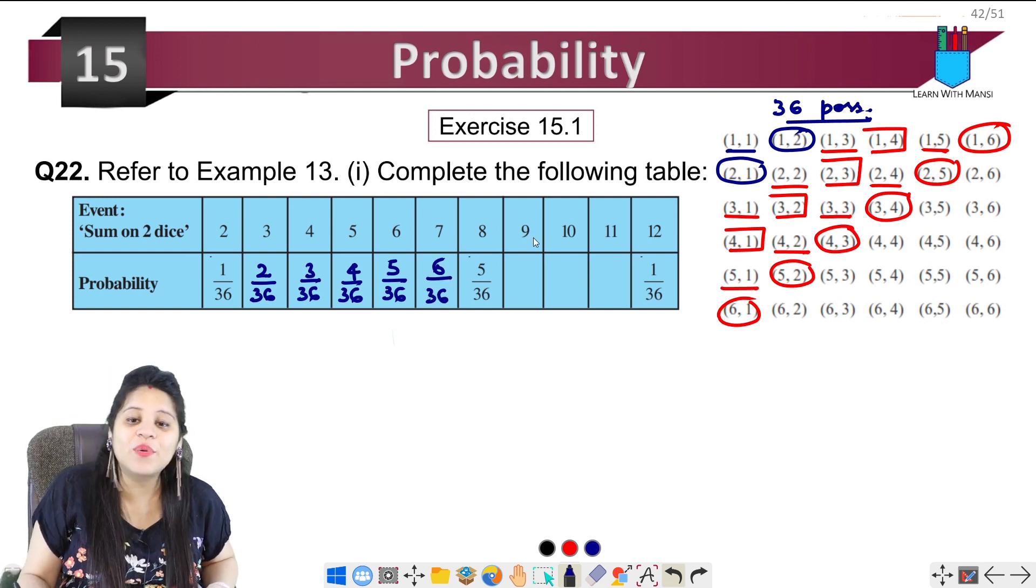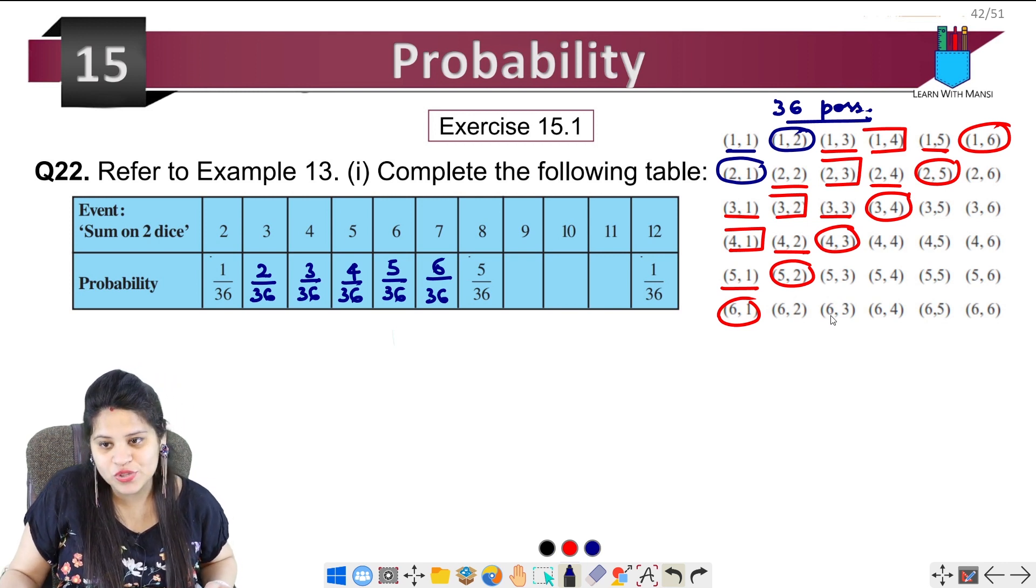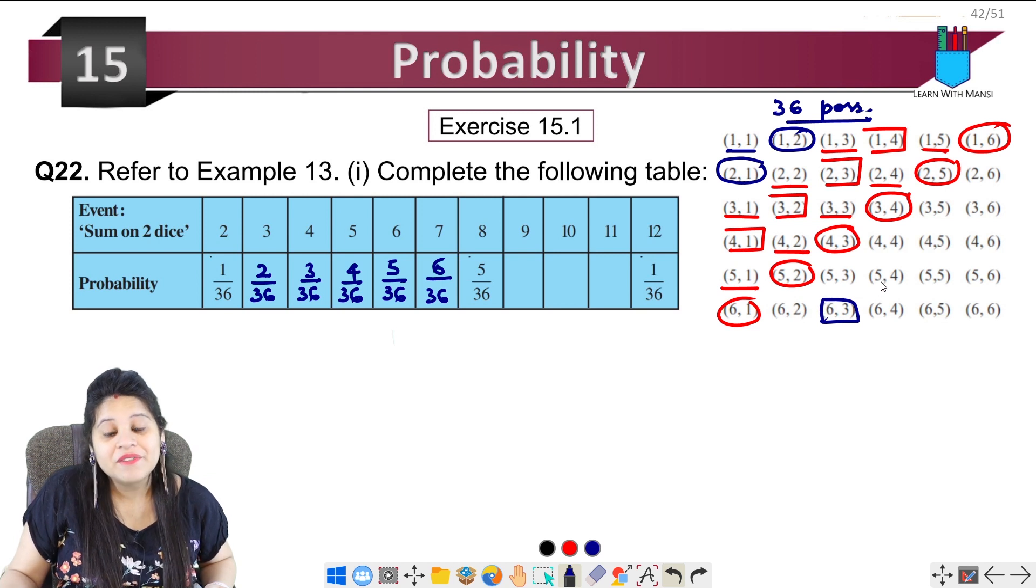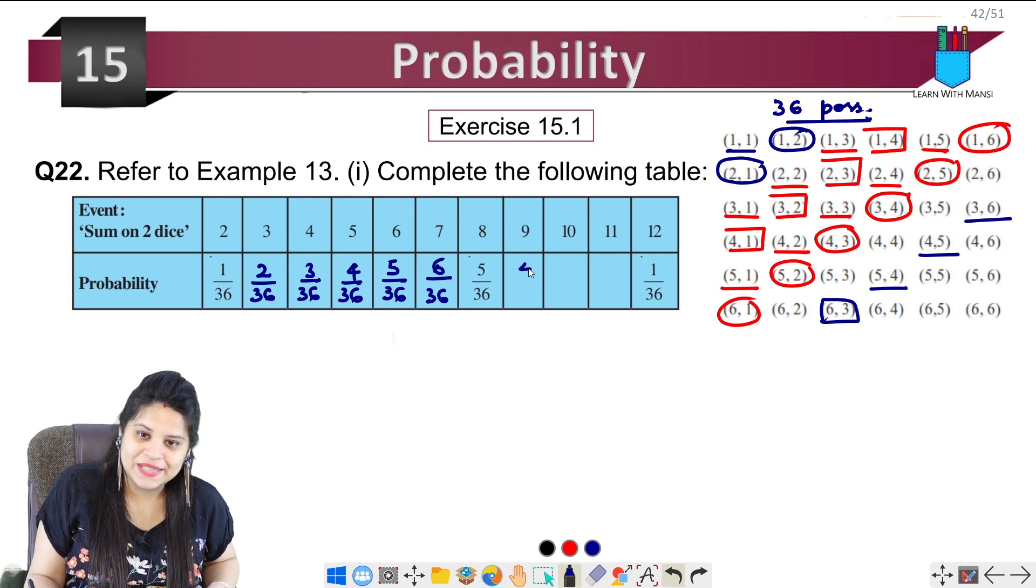Now, 8 already is 9. Now we need to see that sum is 9: 6 plus 3, 5 plus 4, 4 plus 5, and 3 plus 6 is 9. So 1, 2, 3, 4 - four possibilities. It means 4 upon 36.